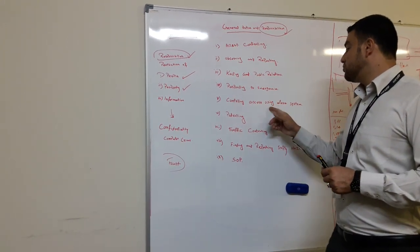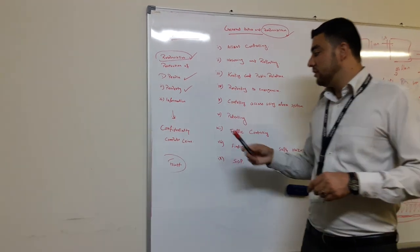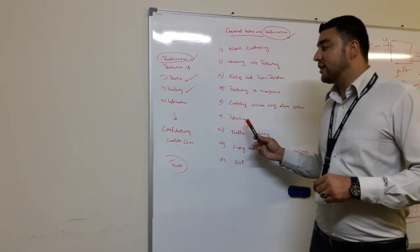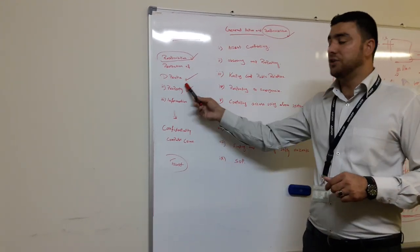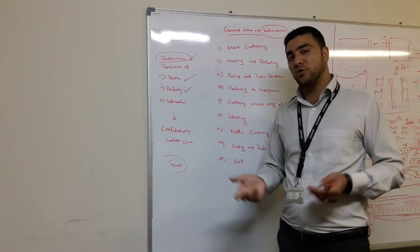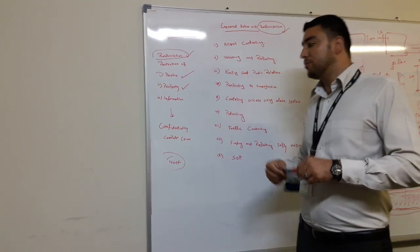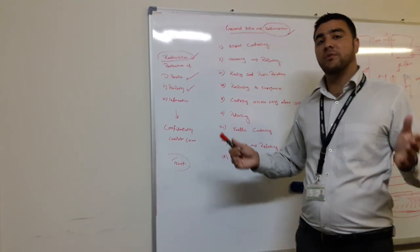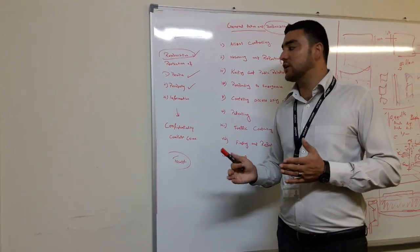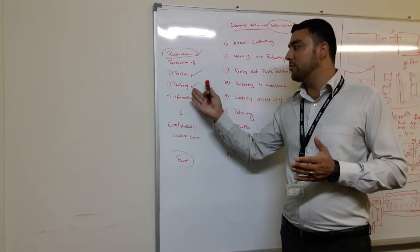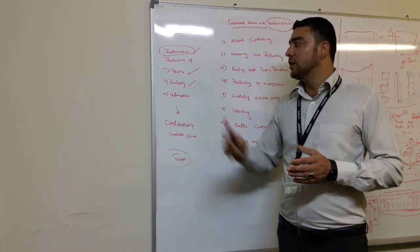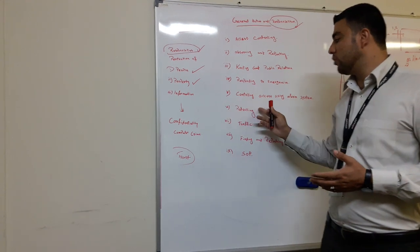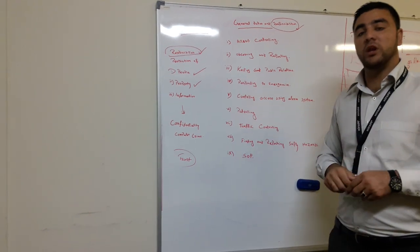The sixth duty is patrolling. During patrolling you monitor and observe the whole property — checking for any hazards, potential property damage, or risks to other people. This is what we call patrolling.